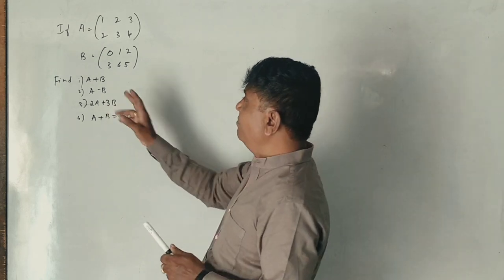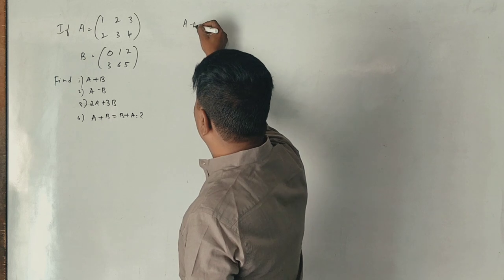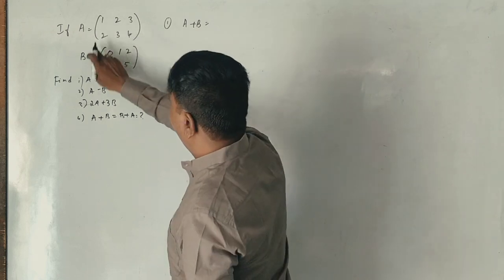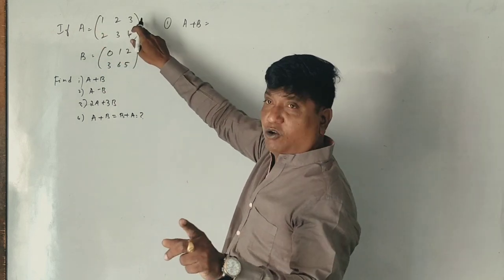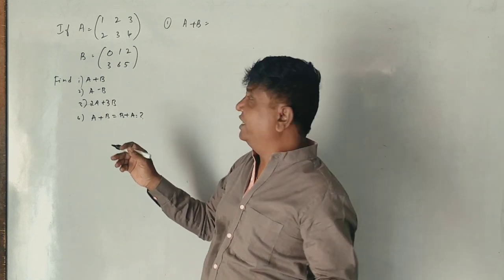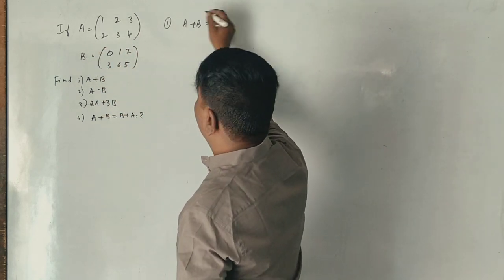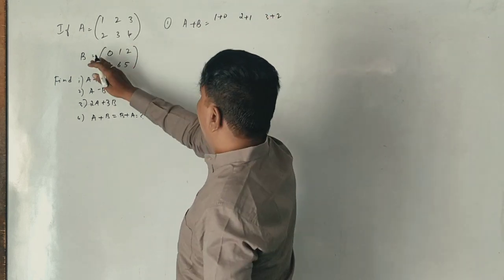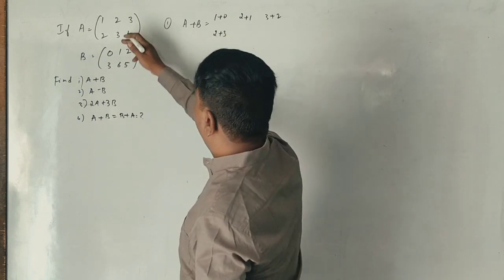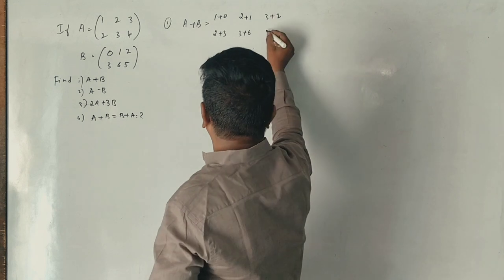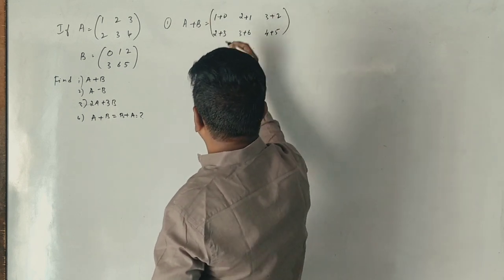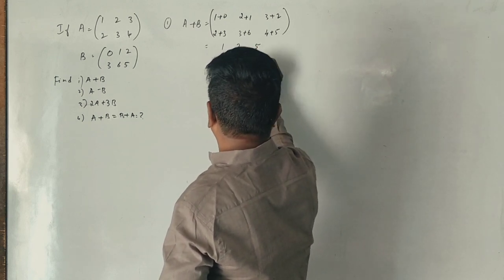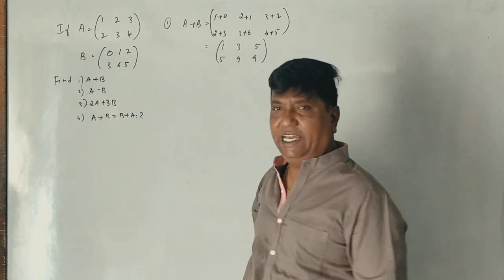Now, A plus B: 1 plus 0, 2 plus 1, 3 plus 2, next row: 2 plus 0, 3 plus 6, 4 plus 5. Final answer: A plus B equals [1, 3, 5; 2, 9, 9]. Okay, first question A plus B answer is correct.